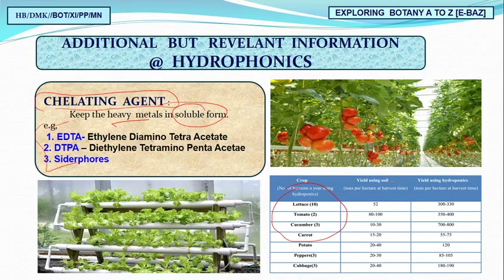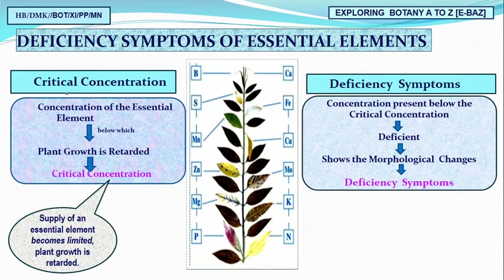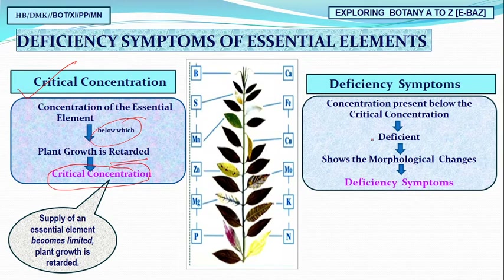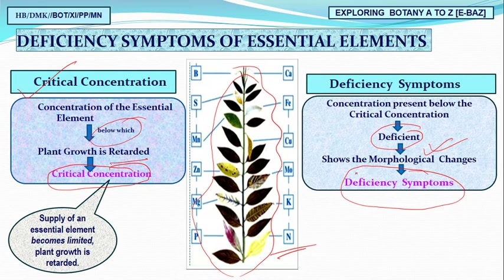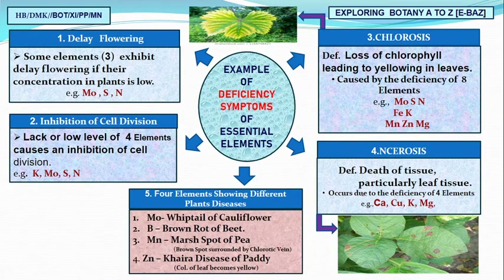We discussed critical concentration — the concentration below which the plant starts growth retardation and shows deficiency. Below the critical concentration, deficiency appears as morphological changes called deficiency syndromes. These are not diseases but deficiency symptoms, which is a very interesting distinction.